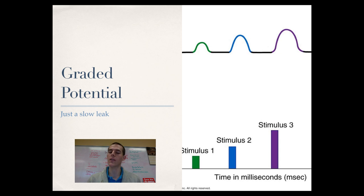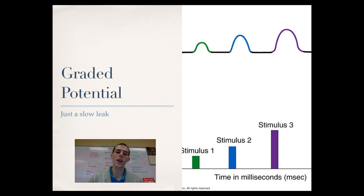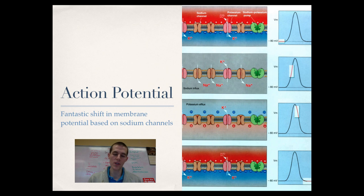This is contrasted with the idea of an action potential. In an action potential, you've got a fantastic shift in membrane potential, and it's based on ion-gated channels. If you look off to the right there, you will see that you have a huge change in the polarity of the membrane. Start out with a resting potential around negative 80 millivolts. As that action potential goes off, we shoot way up to where we go into the positive range and then come back down. So this is the signal shooting through the axon.